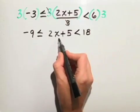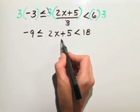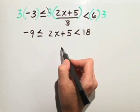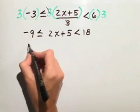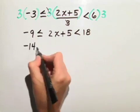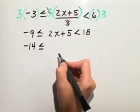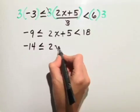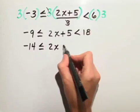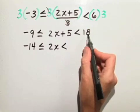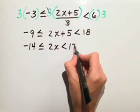Now we're trying to isolate our variable x in the middle, so we subtract 5 from all 3 parts. Negative 9 minus 5 is negative 14, is less than or equal to 2x, because 5 minus 5 is 0, which is less than 18 minus 5, which is 13.